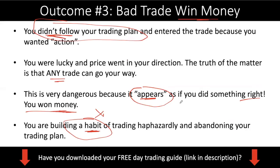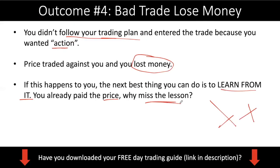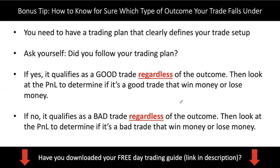You want to eliminate outcome three as much as possible. You also want to eliminate outcome four. But outcome three is definitely worse than outcome four, because with outcome three you are incentivized to repeat it. So here's my bonus tip: how do you know which type of outcome each of your trades falls under? The first thing you need is a trading plan. If you are new to trading and don't have a step-by-step way to approach the market, we have a free guide for you — it's about 35 pages. There's really no reason why you should not have a trading plan, especially if you've been following us and watching our videos.